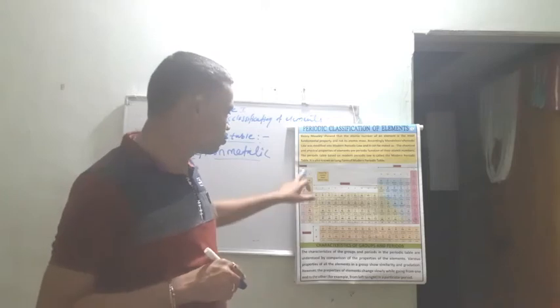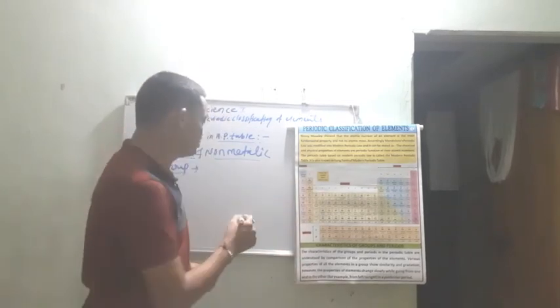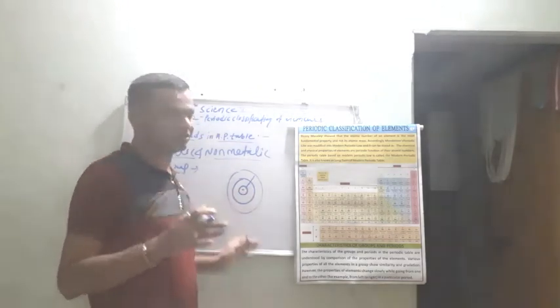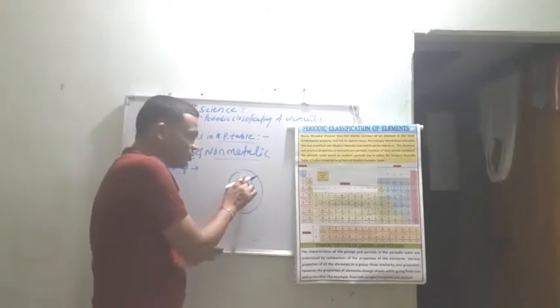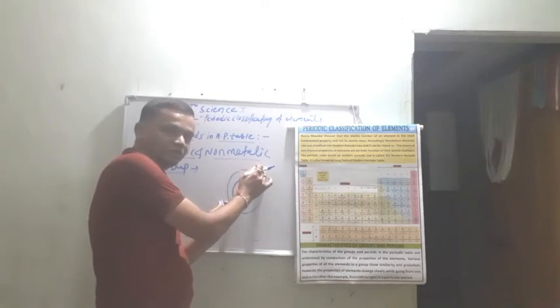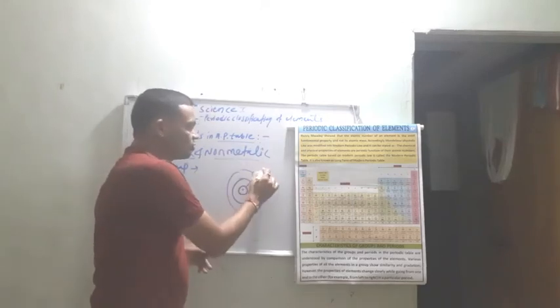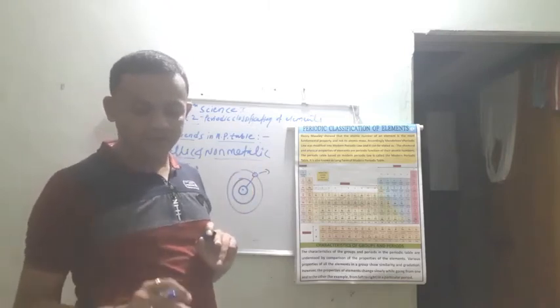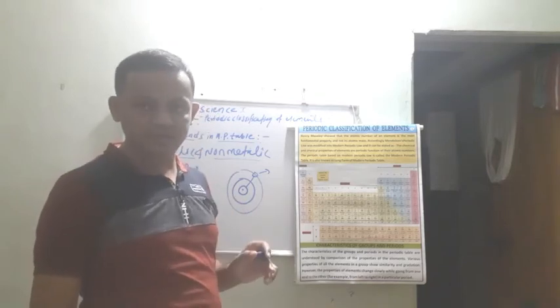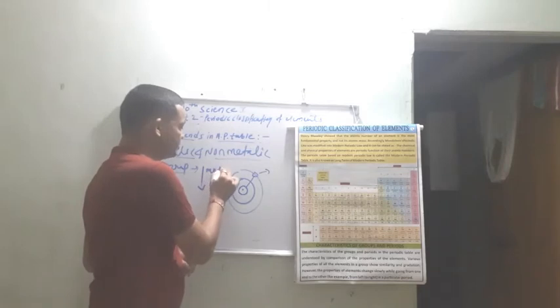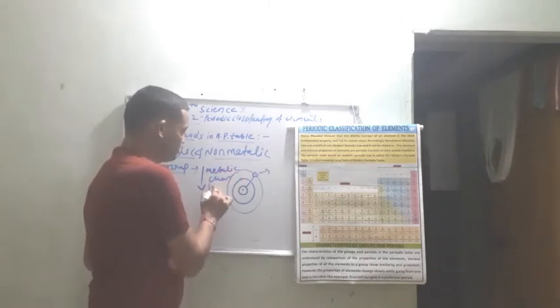Going down a group, we find the distance between the nucleus and the outermost shell is increasing. As the atomic size increases, the distance between the nucleus and the valence electrons increases. As a result, there is less attraction between the valence electrons and the nucleus, and hence the electron is easily lost. Therefore the metallic character increases while going downward in a group.